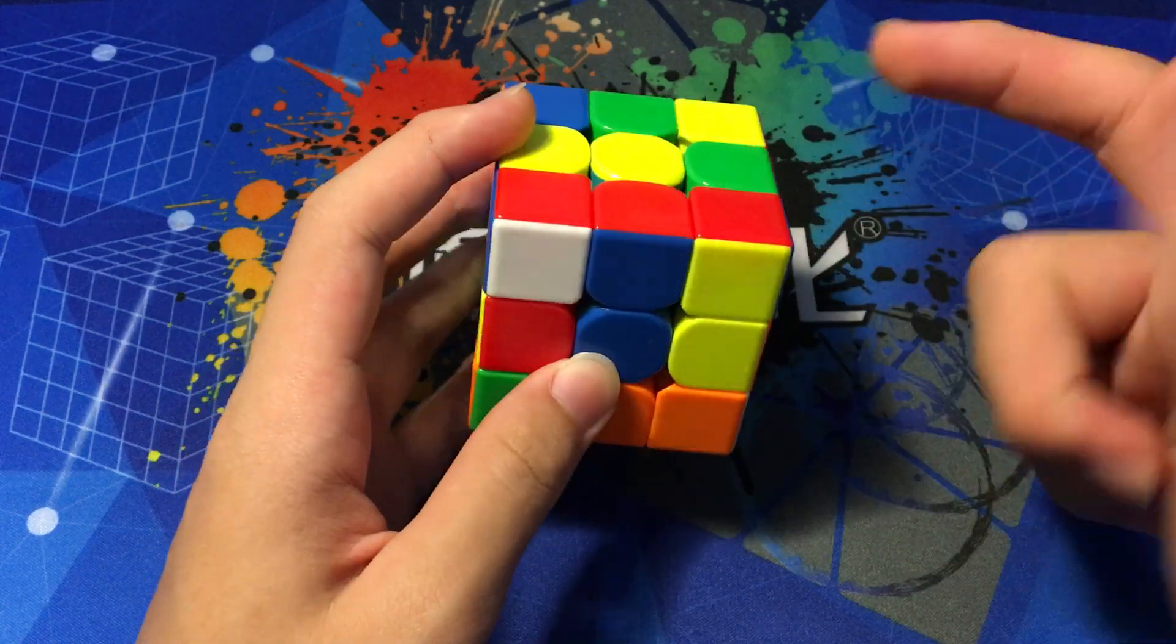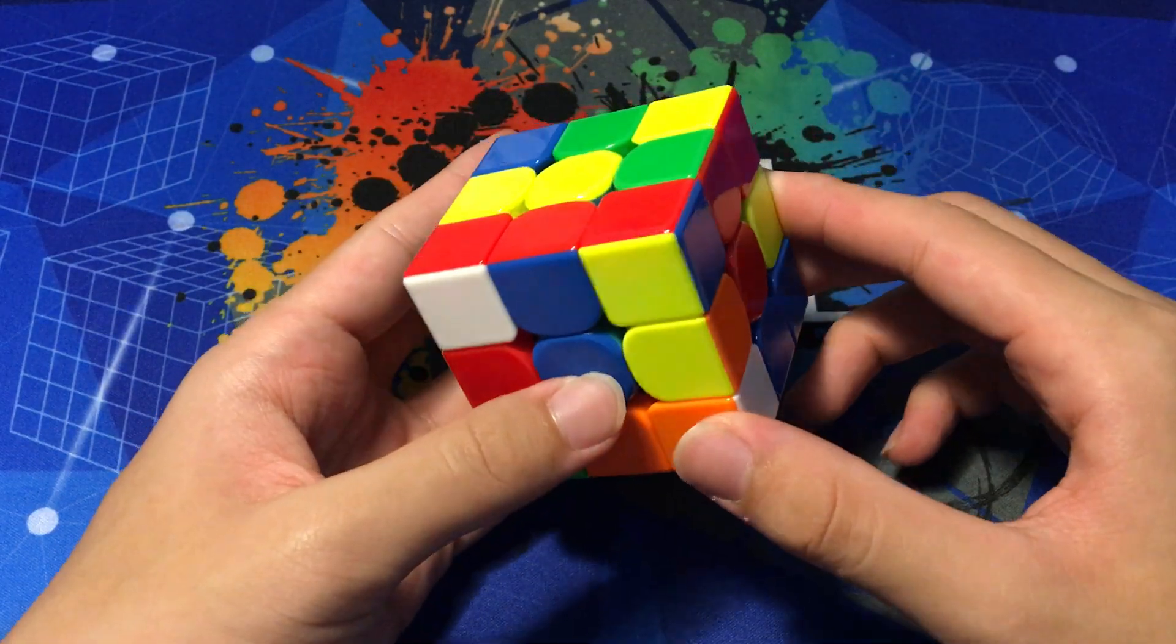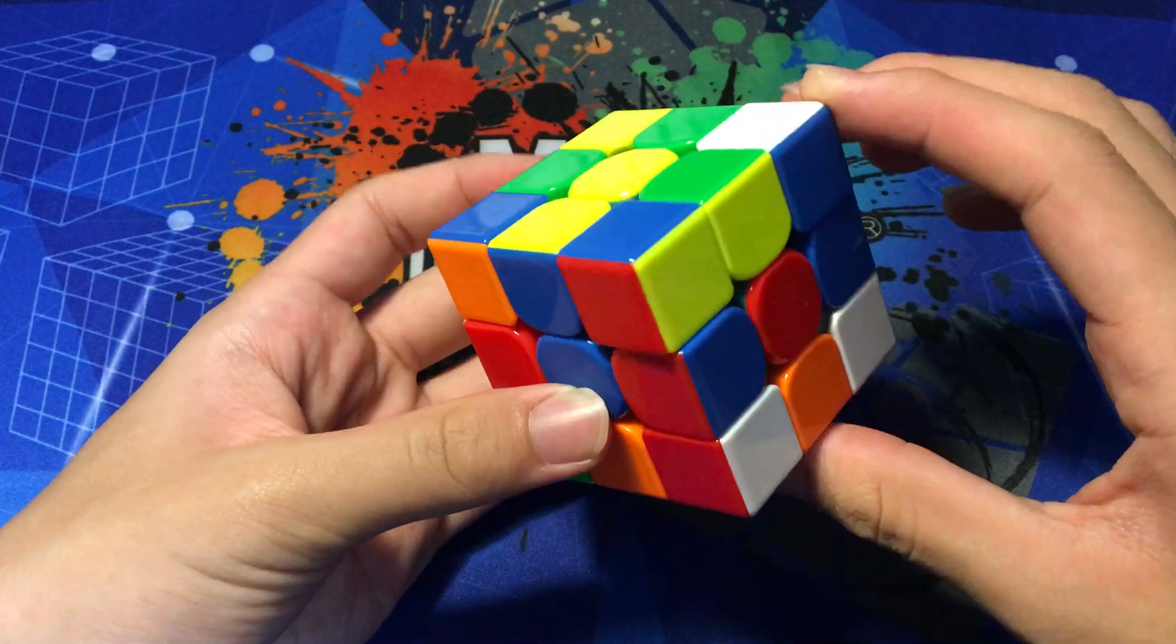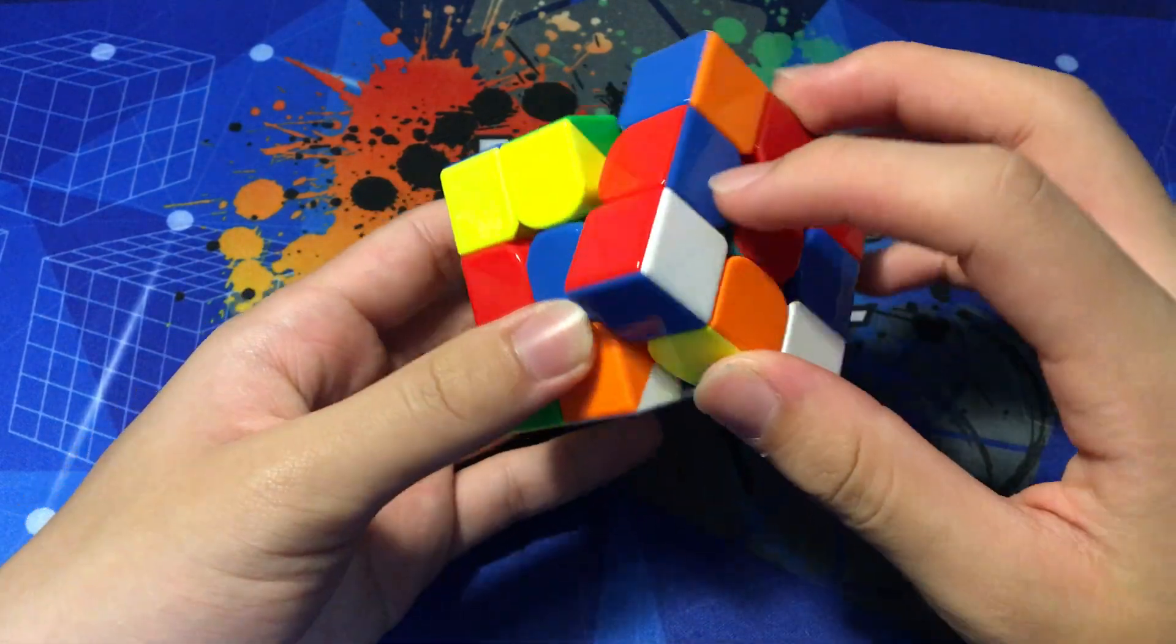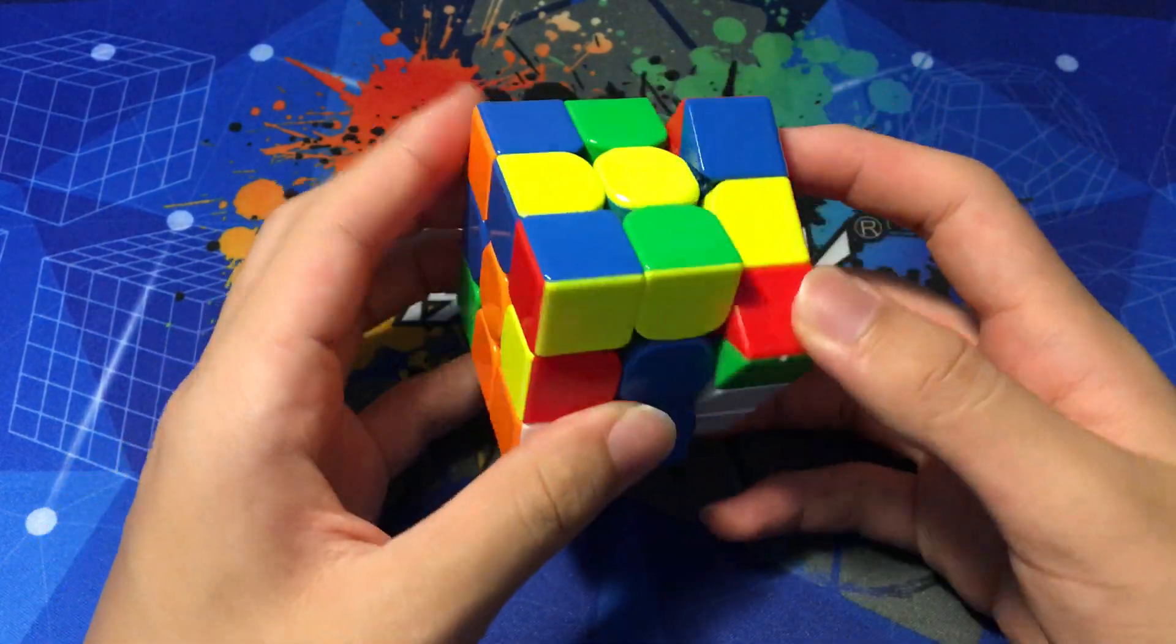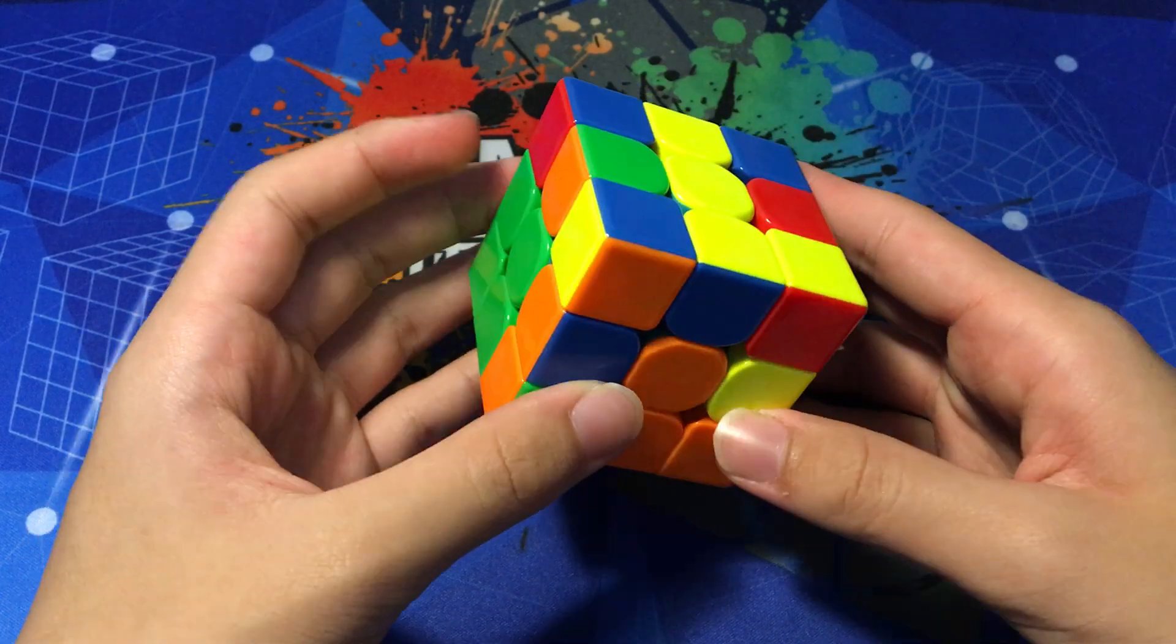And we also see our second pair, which is not going to move when we do the solution of that edge into the back. So we can just go straight ahead into this second pair after that X-cross solution.